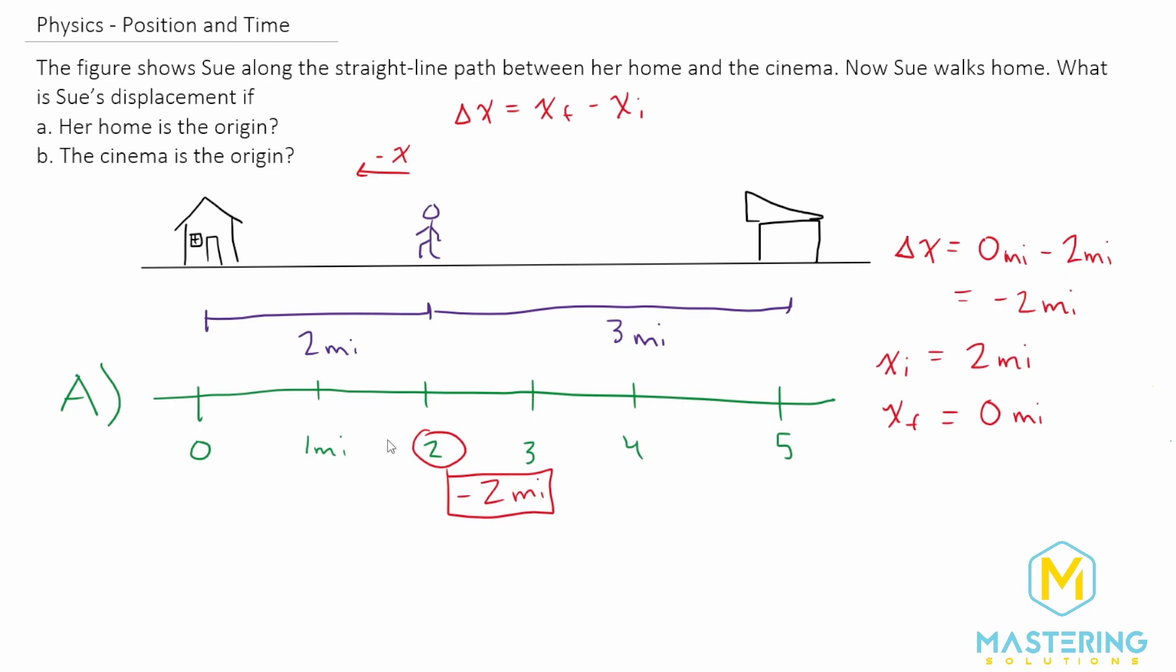Mastering Physics may ask for just a positive two. The negative indicates that she's going in the negative x direction, but displacement is just saying that's how far she ended up from where she started. So now let's go to part B.